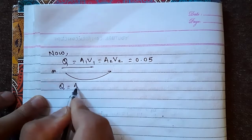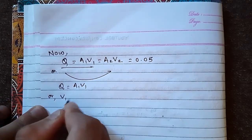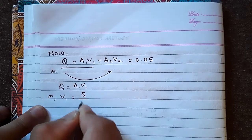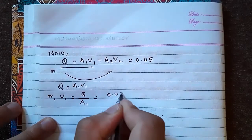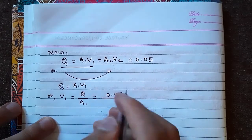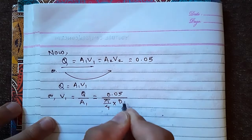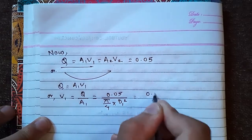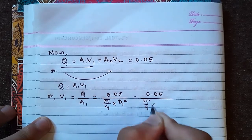A₁V₁ equals to Q divided by A₁. V₁ equals to Q, 0.05, divided by π/4 D₁ square. 0.05 divided by π/4 into D₁ 0.3 square. V₁ equals to 0.7074 m/s.